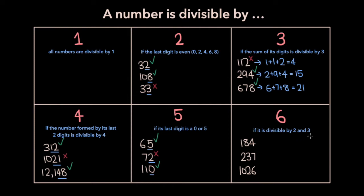A number is going to be divisible by 6 if it's divisible by both 2 and 3. So for the number 184, to check if it's divisible by 2, we look at the last digit, which is 4. 4 is even, which means 184 is divisible by 2. Then we have to check if it's divisible by 3 by summing its digits: 1 plus 8 plus 4, which is 13. Now 13 isn't divisible by 3, which then means that 184 is not divisible by 6.